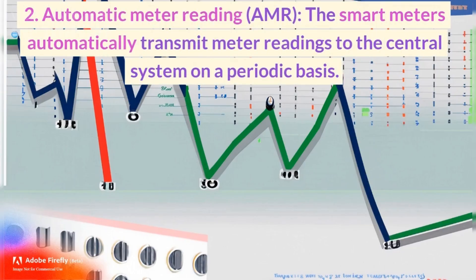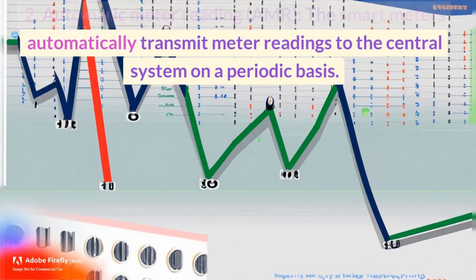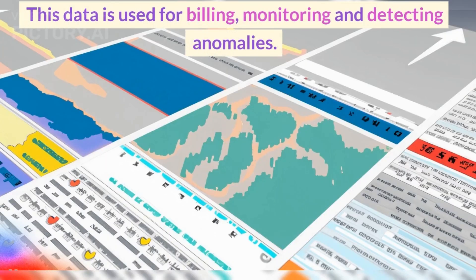2. Automatic Meter Reading (AMR). The smart meters automatically transmit meter readings to the central system on a periodic basis. This data is used for billing, monitoring and detecting anomalies.